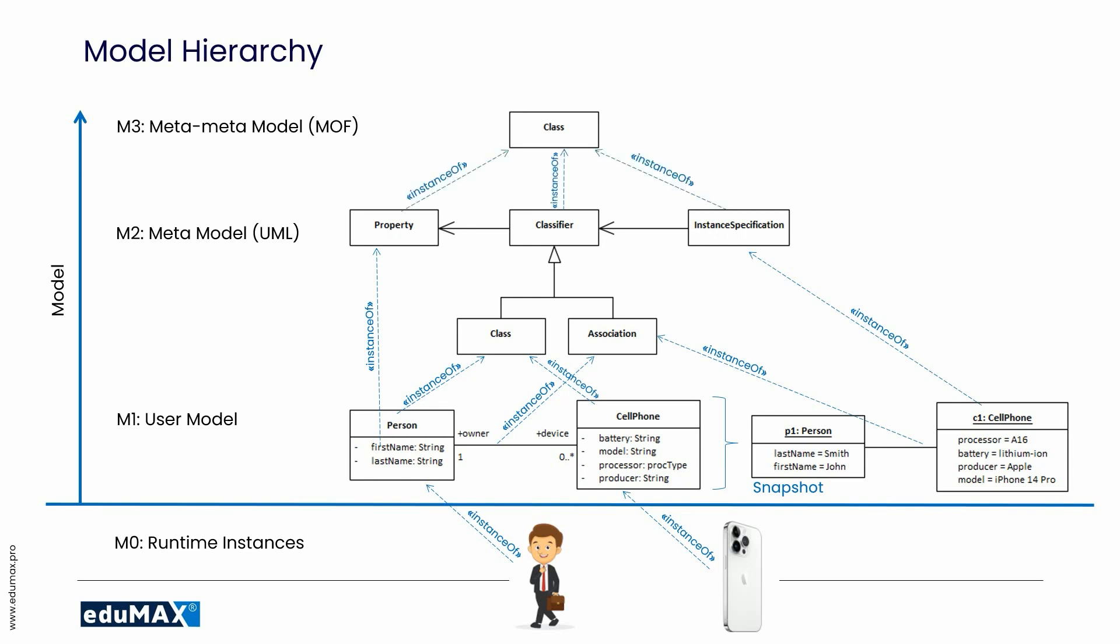Level M2 is like an instance of level M3, and level M1 is like an instance of level M2. And level M1 represents runtime instances.